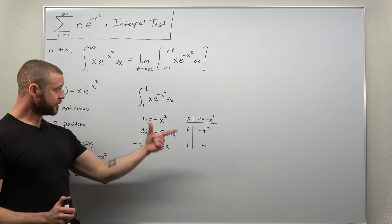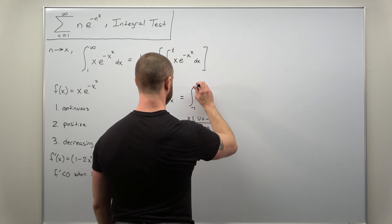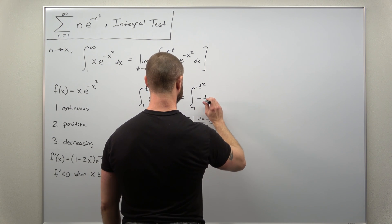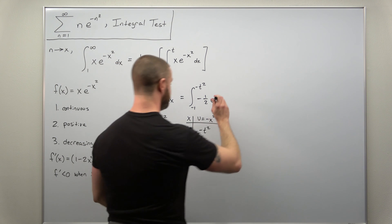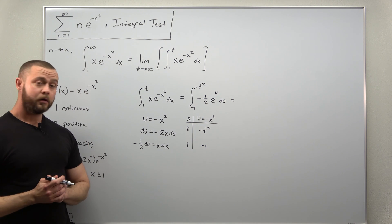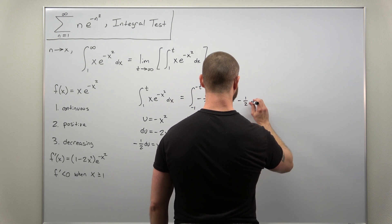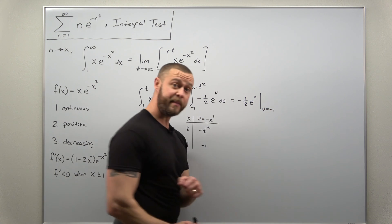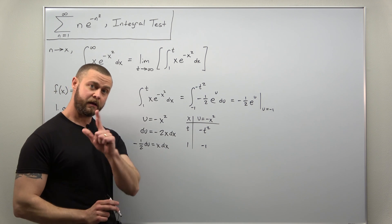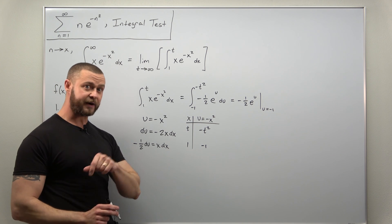Converting from x to u, the integral runs from negative 1 to negative t squared, with a factor of negative one half from the differential and the integrand becomes e to the u. The antiderivative is just e to the u, so we get negative one half times e to the u evaluated at u = negative 1 and u = negative t squared. If you didn't convert your limits, back-substitute u and use the original limits x = 1 to t.